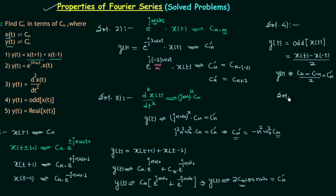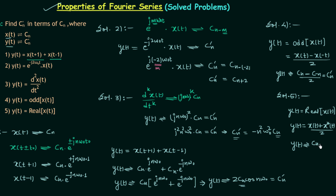In problem 5, y(t) is the real part of x(t). The real part equals [x(t) + x*(t)] / 2. The coefficient of x*(t) is c*₋n by the conjugation property. Therefore cn' = (cn + c*₋n) / 2.